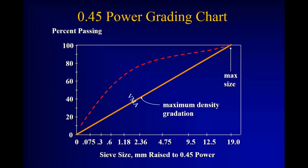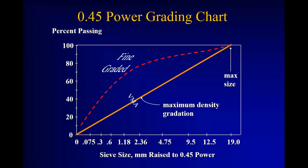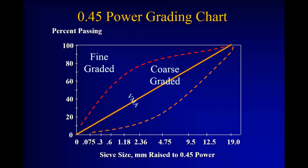If our gradation, illustrated by this dotted red line, falls to the left or upper side of that maximum density line, we call that fine graded. On the number eight sieve, for example, we have almost 75 to 78 percent passing. If it falls on the right side or lower side, we call it coarse graded — that same number eight sieve now only has 8 percent passing in this example.